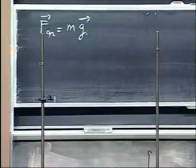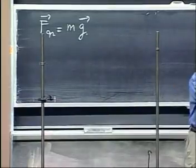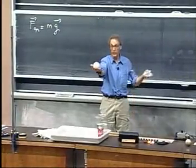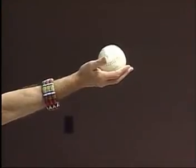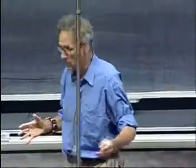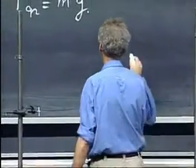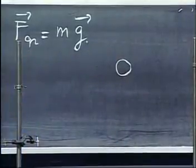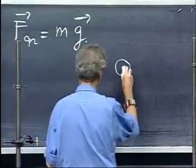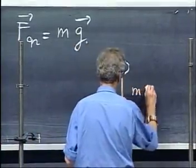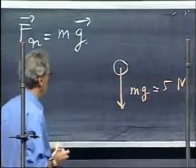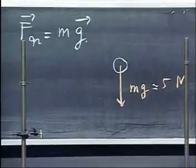Suppose I have here this softball in my hand. In our reference frame, which we accept to be an inertial reference frame, it's not being accelerated. That means the force on it must be zero. So here is that ball, and we know if it has mass m — which in this case is about half a kilogram — there must be a force mg, which is about five newtons for half a kilogram.